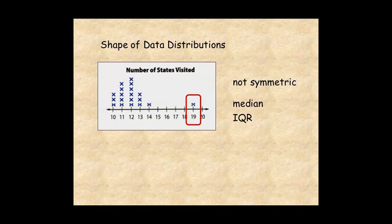So excluding the outlier, the median is 12. The first quartile is 11. The third quartile is 13. And the inner quartile range is 13 minus 11, or 2.